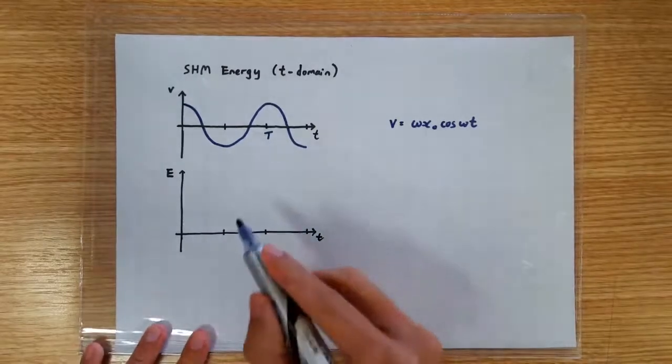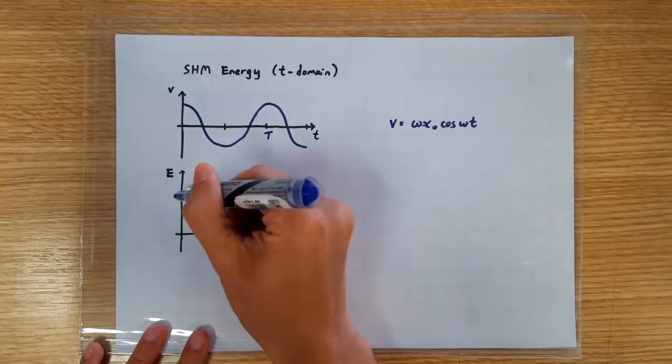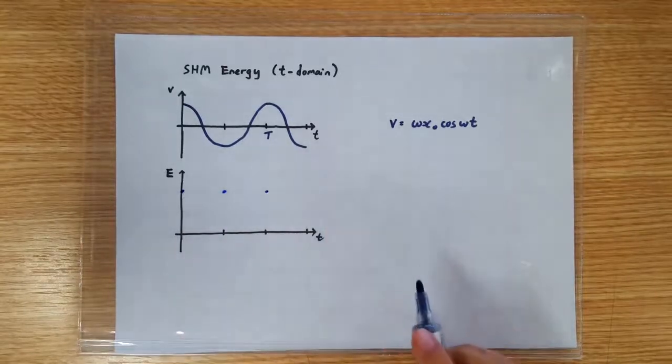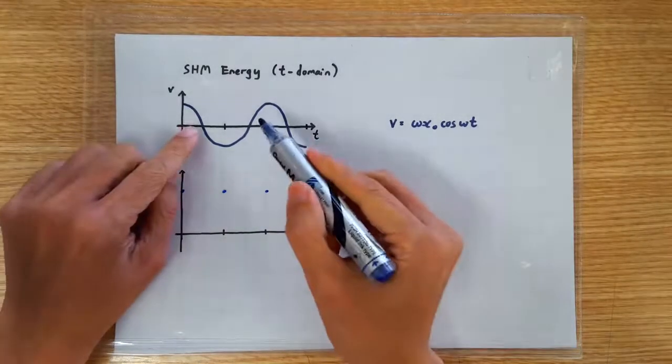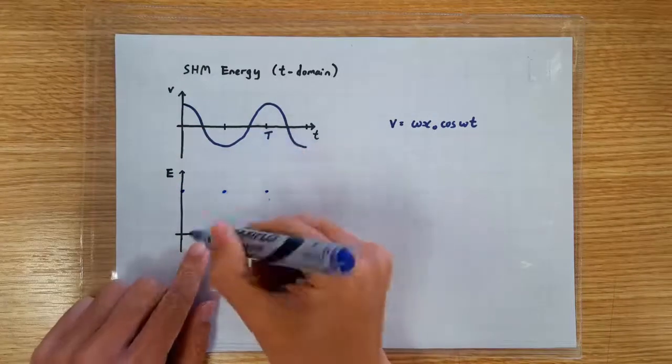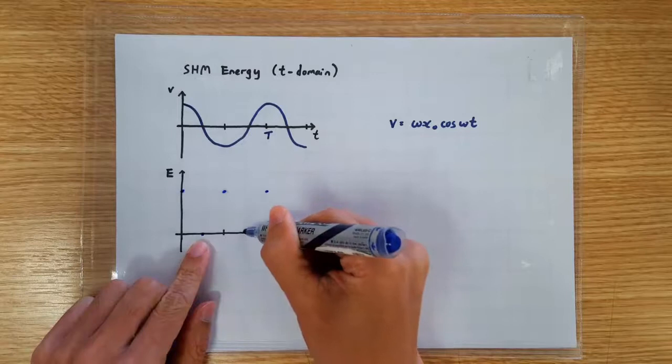So the KE graph should hit maximum here, here, and here. Right? And since the speed is zero here and here, so the KE should also be zero here and here.